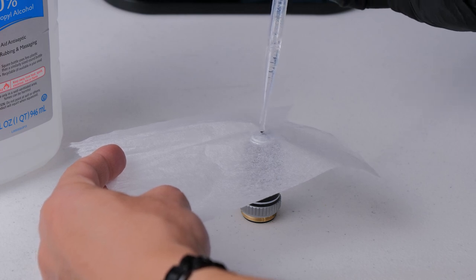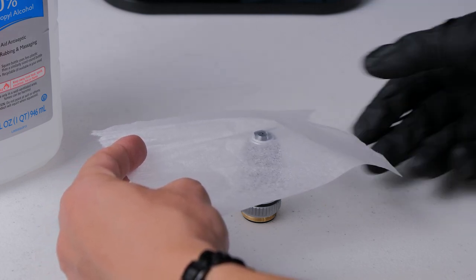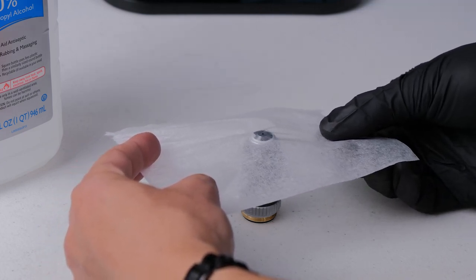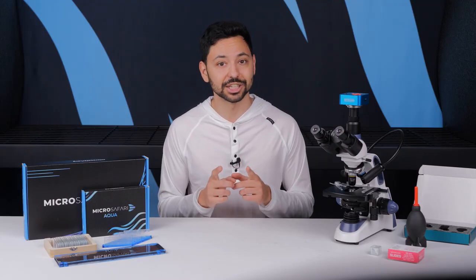Once you're done you'll need to clean off all the oil from your objective before it dries, ideally within about an hour or two. You'll see instructions on this during the cleaning section later in the video.